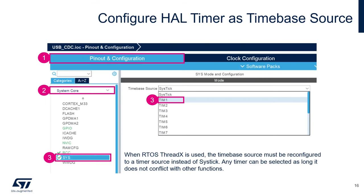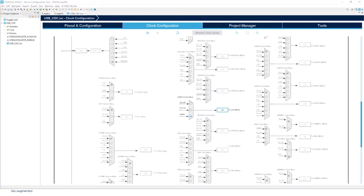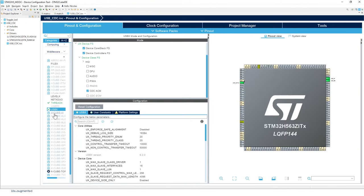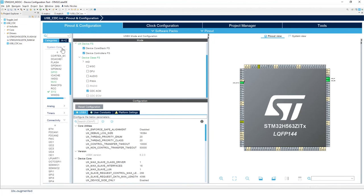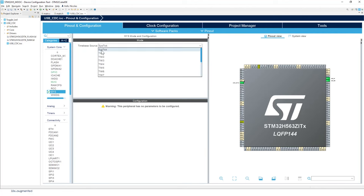Now it's time to select the time-base source for the HAL timer. Usually by default the time-base source is SysTick, but since we're using ThreadX RTOS we need to change it to a hardware timer inside the STM32H5 instead of SysTick. You can use any timer that doesn't conflict with other functions. Go back to Pinout Configuration, under System Core > SYS, change from SysTick to Timer1.